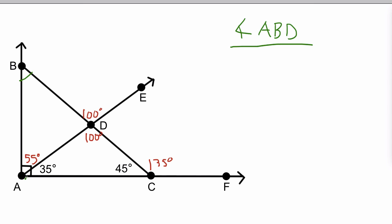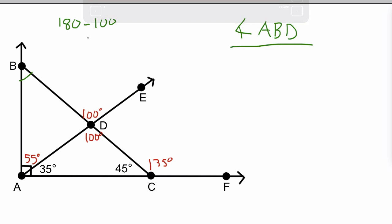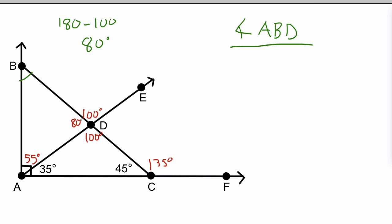We just did something similar with DCF. We can see that A to D to E is a straight line, so we know that is 180 degrees. We know that segment B to D is splitting that 180 degrees, so we're going to subtract 100 from 180, and that gives us 80 degrees. That's that missing angle — I'll write it in so you can see it. Now we have two angles of the triangle: 55 degrees and 80 degrees.